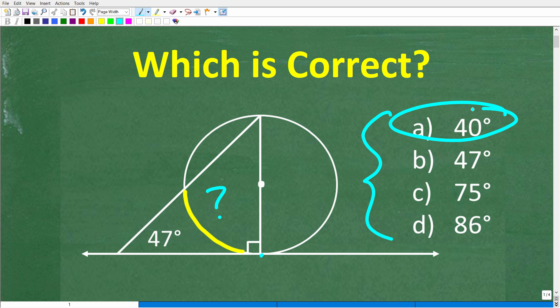All right, now feel free to use a calculator. But you really don't need one, but this is a multiple choice question, and let's take a look at our answers. So A is 40 degrees, B is 47 degrees, C is 75 degrees, and D is 86 degrees. All right, now, if you know the answer, put that into the comment section. I'll share the correct answer in just one second. Then, of course, I'm going to fully explain how to solve this problem step by step.